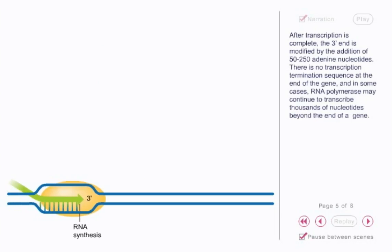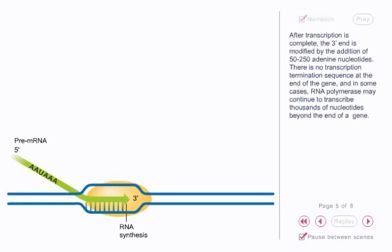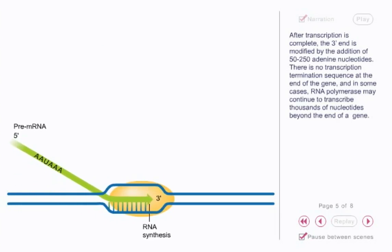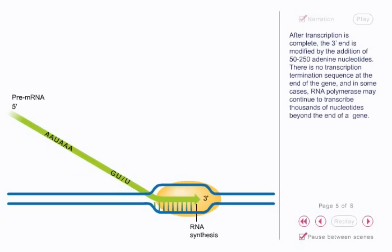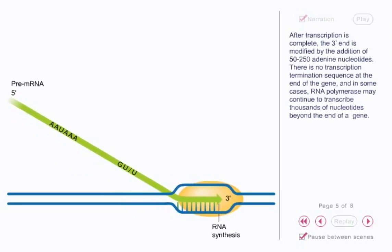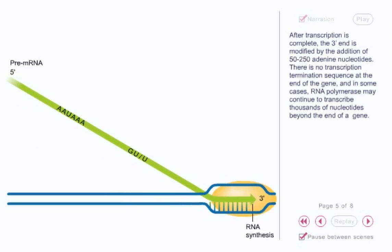After transcription is complete, the three-prime end is modified by the addition of 50 to 250 adenine nucleotides. There is no transcription termination sequence at the end of the gene, and in some cases, RNA polymerase may continue to transcribe thousands of nucleotides beyond the end of a gene.